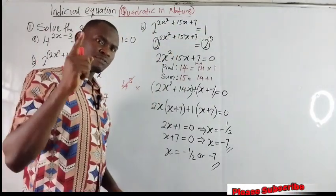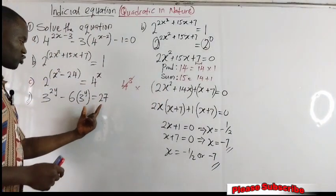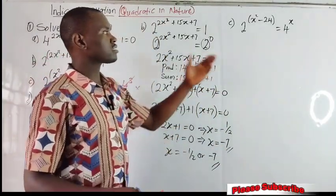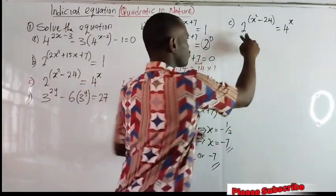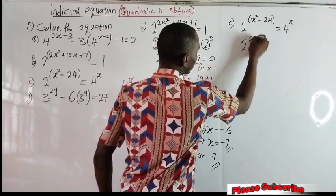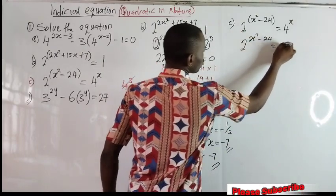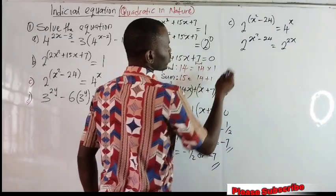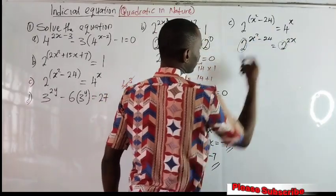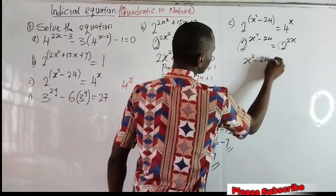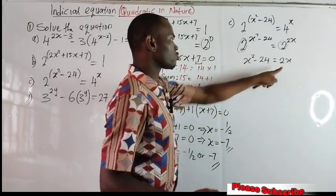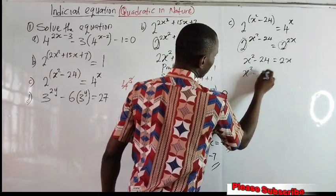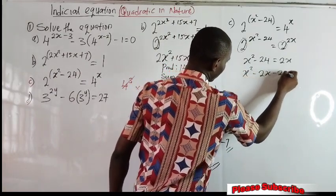I will solve one more, and when I have done that, I will leave you to solve the fourth one. To solve the third one, the first thing I should do is make the bases equal. I have 2 and 4 here, so let me reduce them to be equal. This is 2 raised to the power of x squared minus 24 equal to 2 raised to the power of 2, since 2 power 2 is 4. The bases are equal now, so we drop their powers and equate: x squared minus 24 equal to 2x. Bringing 2x across gives a typical quadratic equation: x squared minus 2x minus 24 equal to 0.